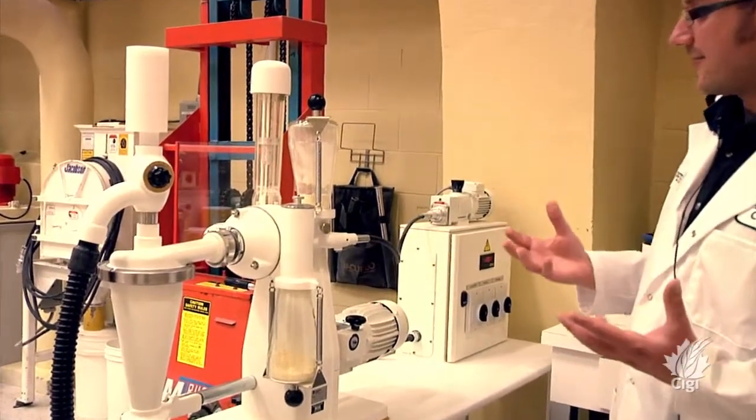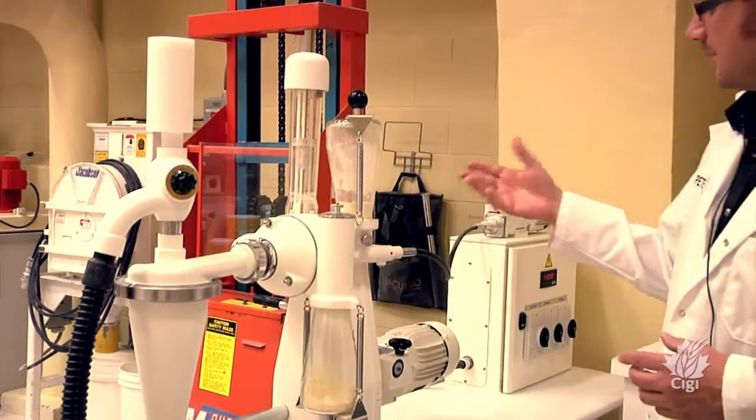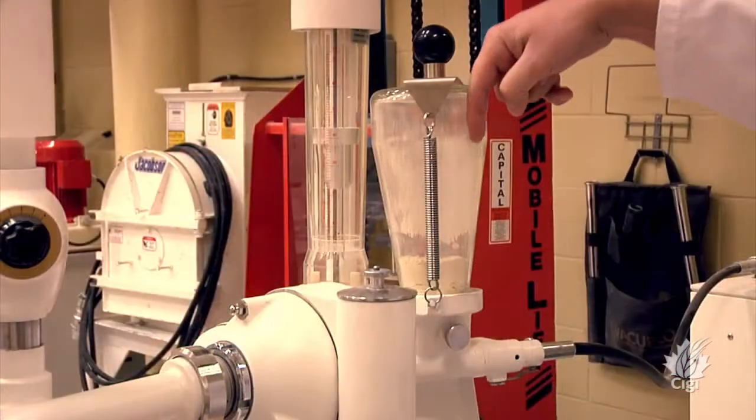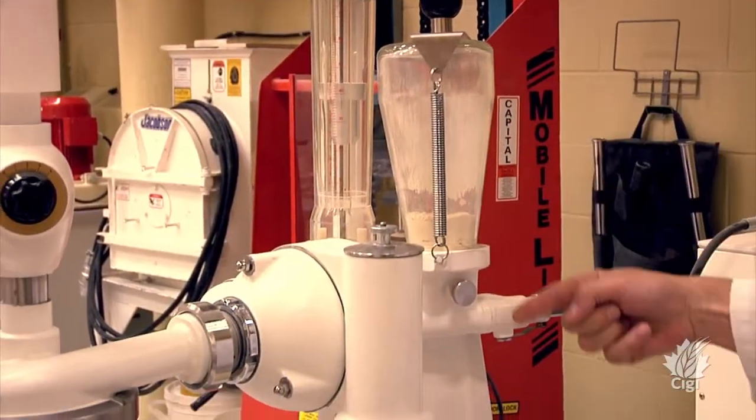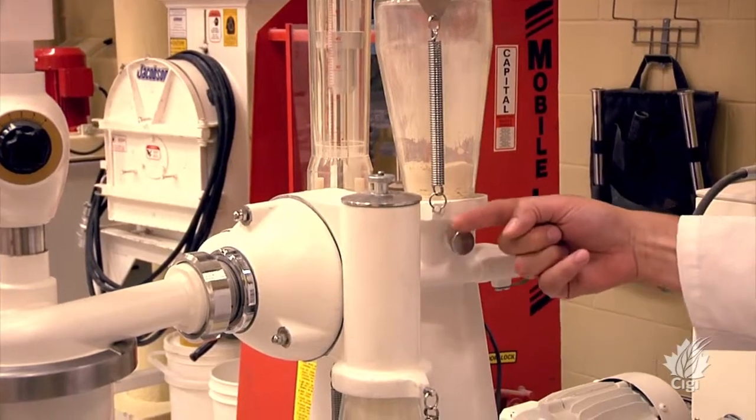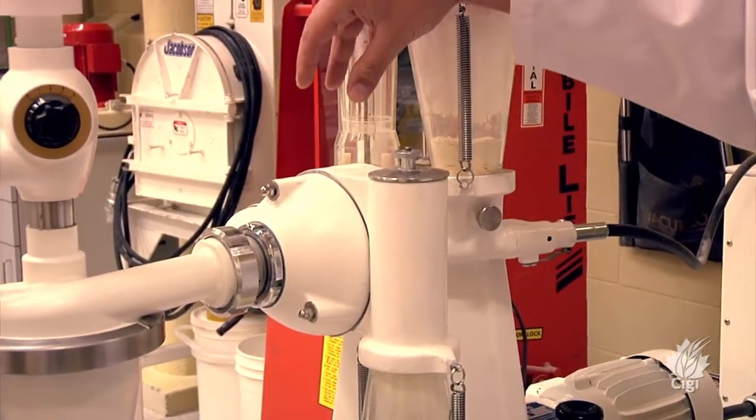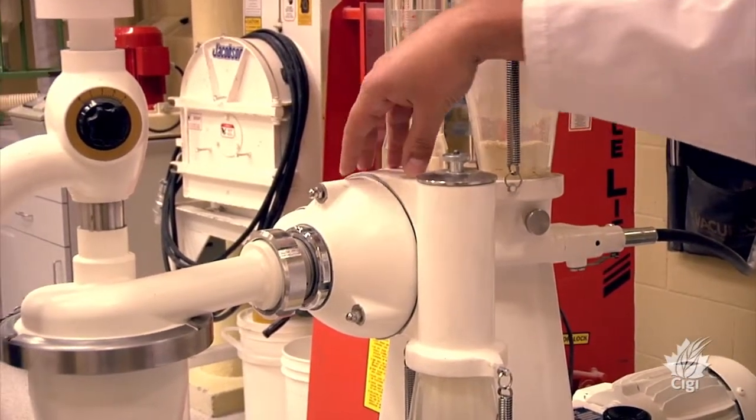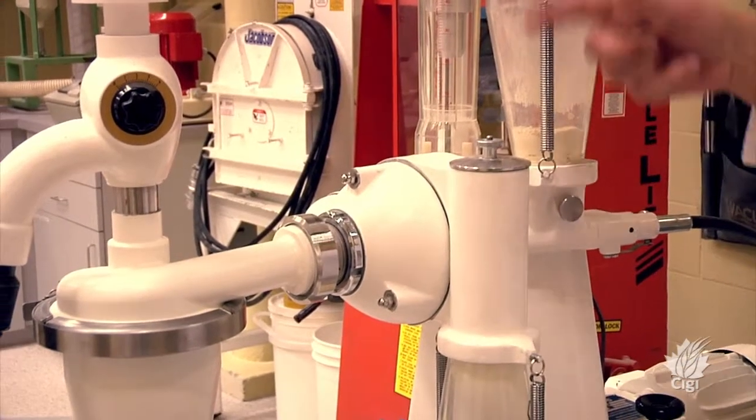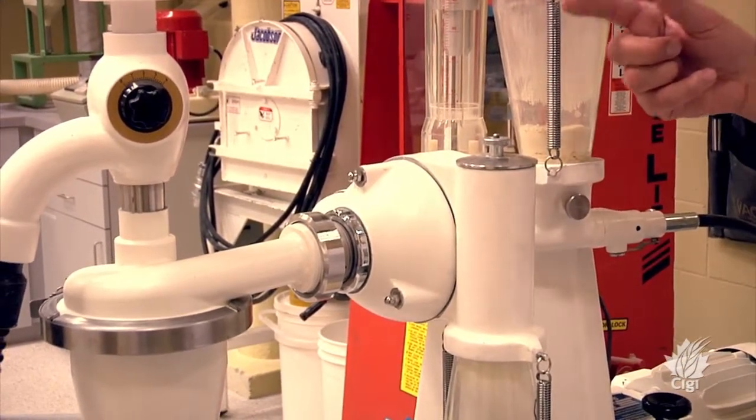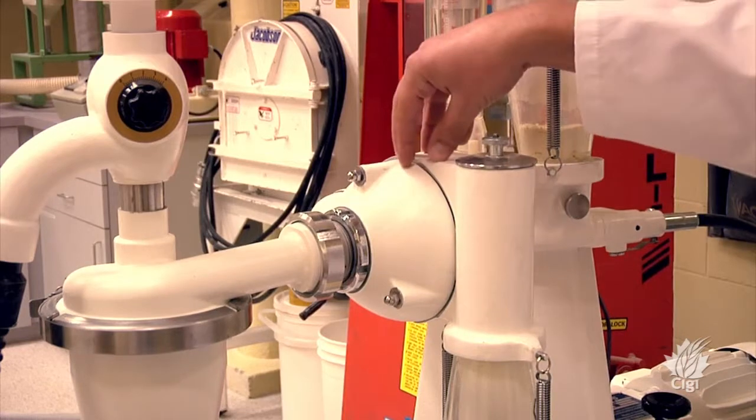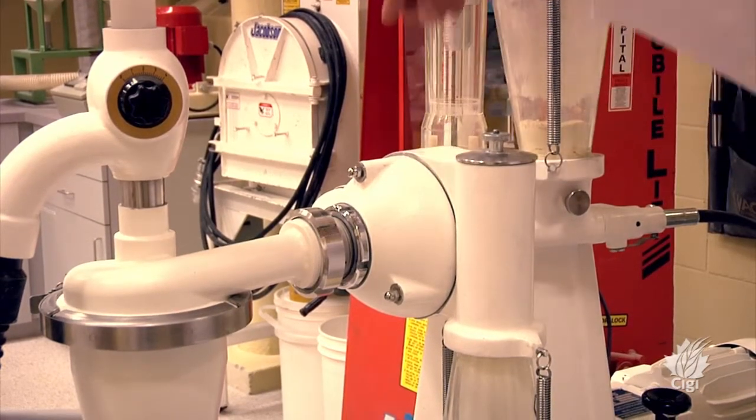I take my flour—in this case we have split pea flour. It is fed through by a rotating screw and it's introduced into this chamber here. There is a rotating wheel, it's called the classifier wheel, inside here as well as air flow.